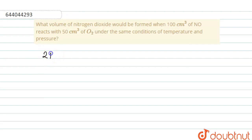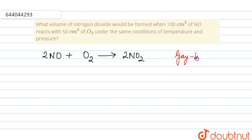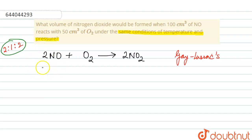The reaction is: two moles of nitrogen monoxide react with one mole of oxygen to form two moles of nitrogen dioxide. This is the balanced equation. According to Gay-Lussac's law, reactants bear a simple ratio with one another and also with the product — the ratio is 2:1:2. Since there are similar conditions of temperature and pressure, the molecular ratio equals the volumetric ratio. So two volumes of NO react with one volume of O₂ to form two volumes of NO₂.